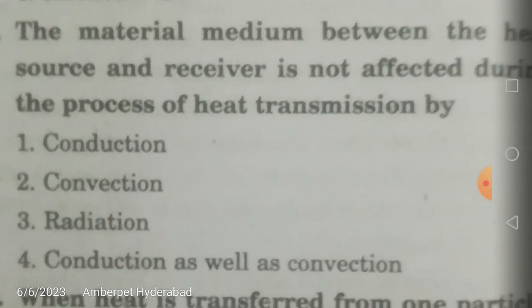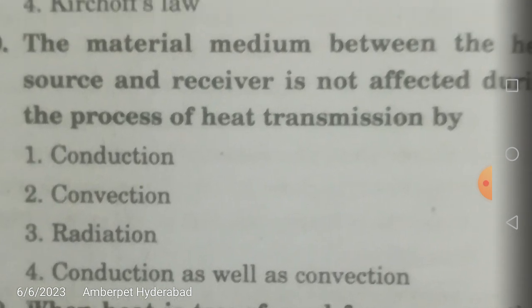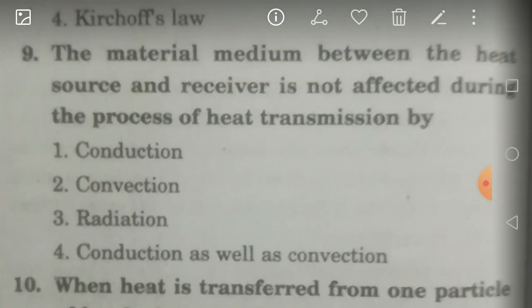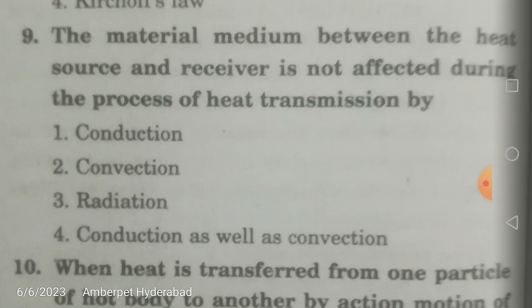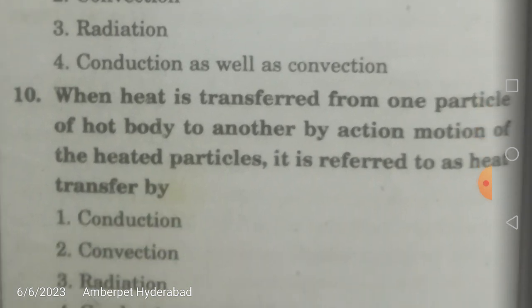The material medium between the heat source and receiver is not affected during the process of heat transmission by which mode — conduction, convection, or radiation? The correct answer is radiation. For example, between the sun and Earth's surface, after thousands of kilometers above the surface there is complete vacuum with no medium at all, yet we still receive heat energy from the sun.